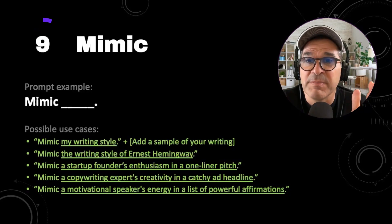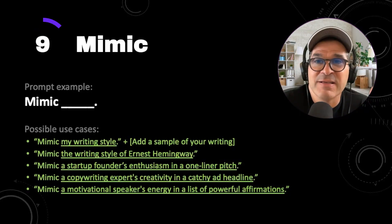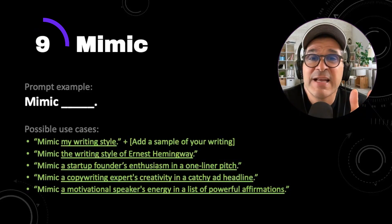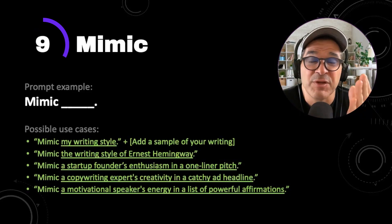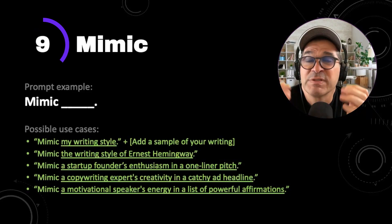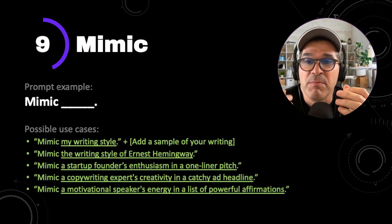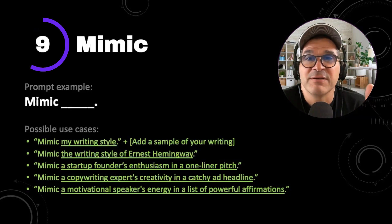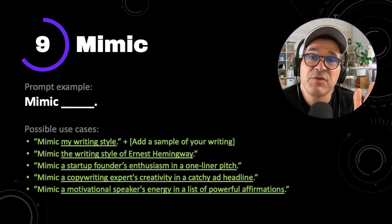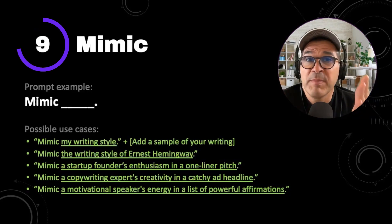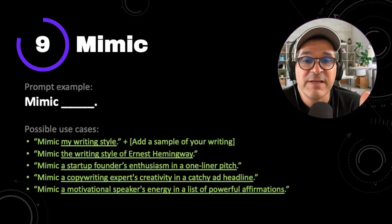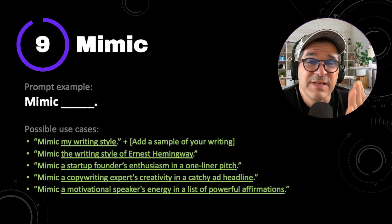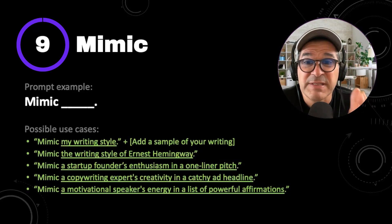Power prompt number nine is mimic — you might also see it as act as or pretend to be, but mimic is short and sweet. This is a handy prompt when you know there's a particular style you want to emulate. For example: mimic my writing style, mimic the writing style of Ernest Hemingway, mimic a motivational speaker's energy, mimic a startup founder's enthusiasm in a one-liner pitch, or mimic a copywriting expert's creativity in a catchy ad headline. If you already know the style you're going for, you can use this to get some really cool results out of ChatGPT.